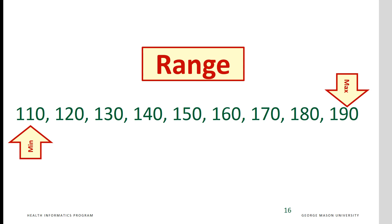Range is the difference between the highest and the lowest score. It's easy to calculate but highly unstable. If we want to calculate the range for the data displayed here, the highest value is 190 and the lowest value is 110, and the difference of the range is 80.